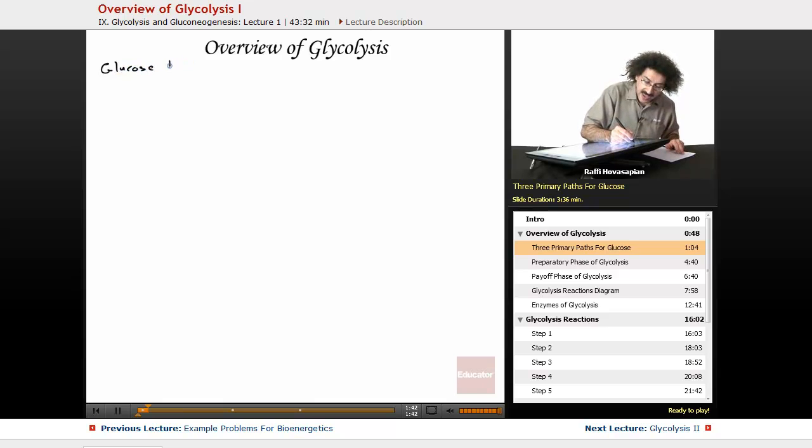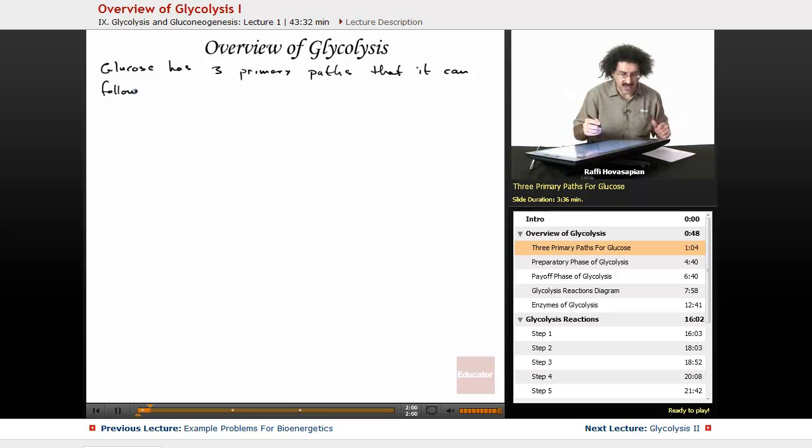So glucose has three primary paths that it can follow. And we say primary, most of it happens this way. There are a few other things that glucose can do, but most of glucose goes to these three things.